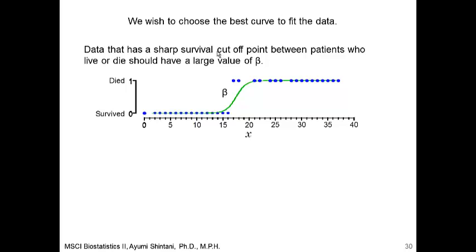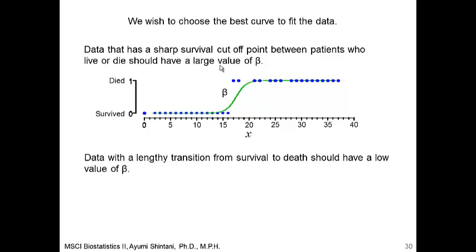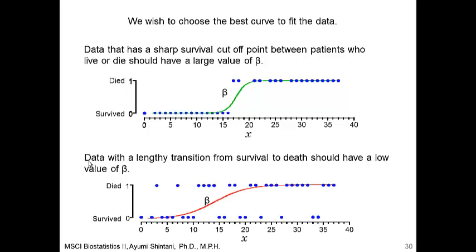Data with a sharp survival cutoff point between patients who live or die should have a large value of beta — beta is the log of the odds ratio. A higher value of beta gives better separation, compared to data with a lengthy transition from survival to death, which should have a lower value of beta. Using this S-shaped non-linear line, the expected value does not go below 0 or exceed 1.